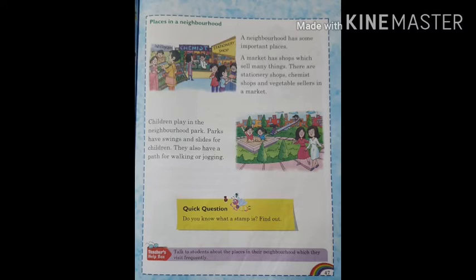अगर आप लोग market जाएंगे तो आप लोग को दवाई का दुकान, किराने का दुकान, किताबों का दुकान, या फिर सब्जियों का दुकान — सब चीज market में available मिलेगा। ये सब चीजे हमारे neighborhood में होना बहुत ही ज़्यादा ज़रूरी है।